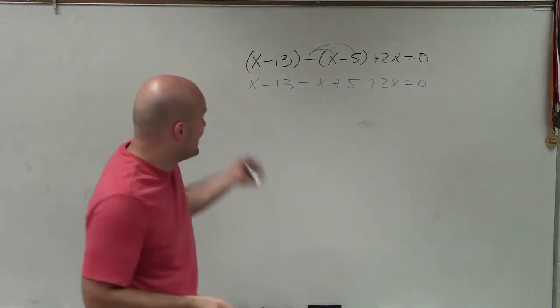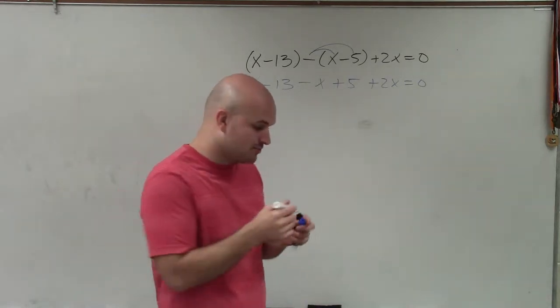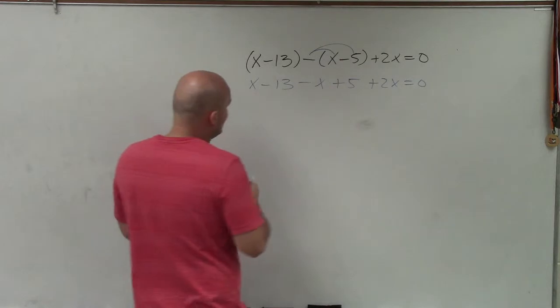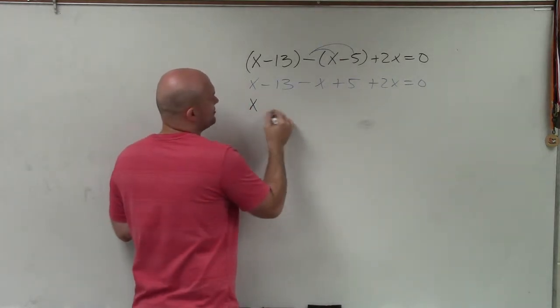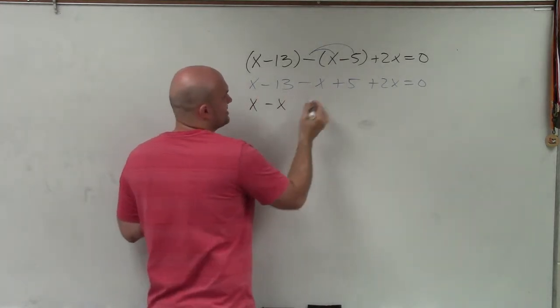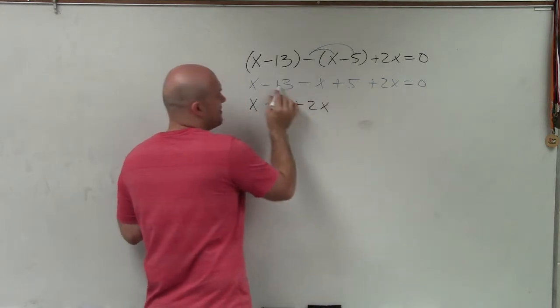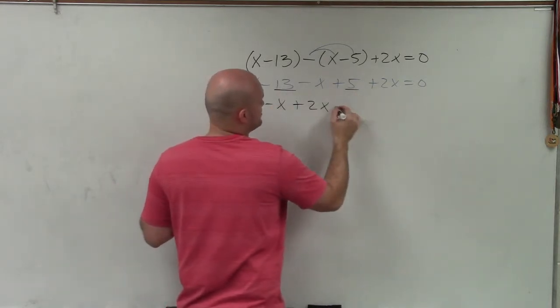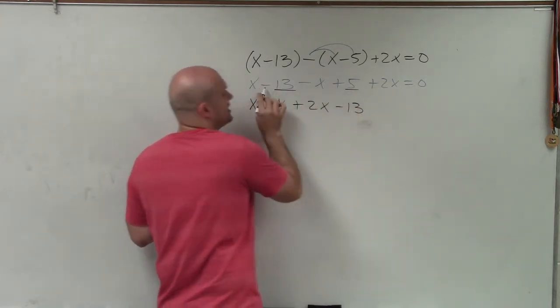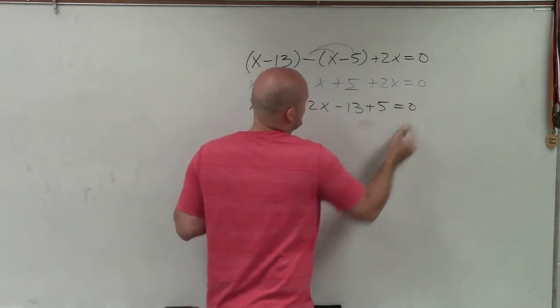So now you can see I have my three variables without any parentheses, which I can now combine. And to combine them, I like to rewrite the equation with my variables next to each other. So I write x-x+2x, then I write my constant, which would be -13. Make sure you carry the sign. Plus 5 equals 0.